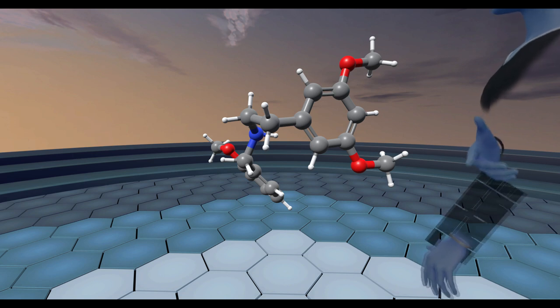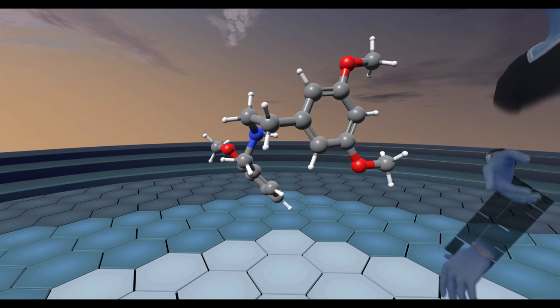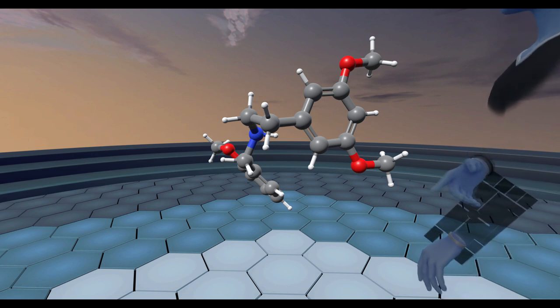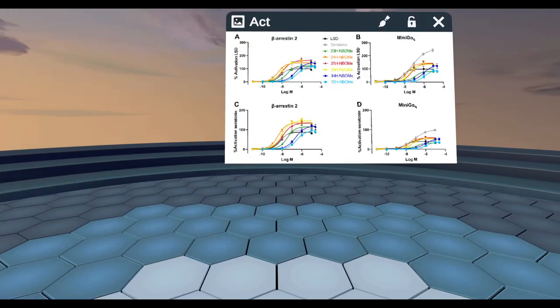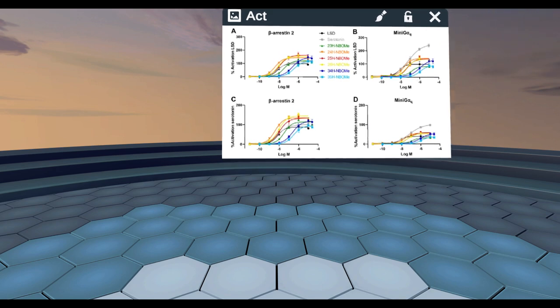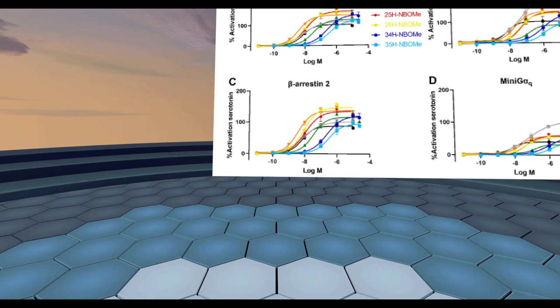So the idea here being that we can look at how do these different methoxy substitutions change the activity of the drug at serotonin 2A receptor. All of these in vitro experiments were done by Ellen at the University of Ghent in Belgium. And what we can see is that if we look at the beta-arrestin recruitment from either LSD or serotonin...